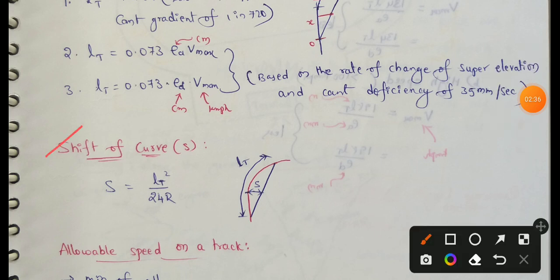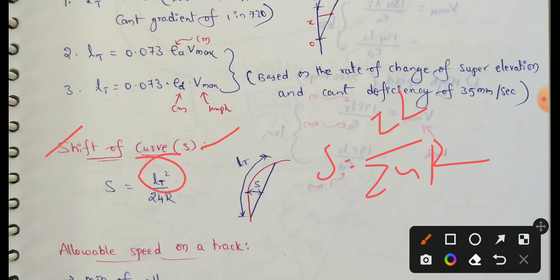Next, shift of curve. S equals L square by 24 into R. In this value, we substitute length of transition curve, so S equals shift of curve equals LT square by 24 into R. This is for railways transition curve and shift.